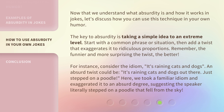Now that we understand what absurdity is and how it works in jokes, let's discuss how you can use this technique in your own humor. The key to absurdity is taking a simple idea to an extreme level. Start with a common phrase or situation, then add a twist that exaggerates it to ridiculous proportions. Remember, the funnier and more surprising the twist, the better. For instance, consider the idiom 'it's raining cats and dogs.' An absurd twist could be: 'It's raining cats and dogs out there — just stepped on a poodle.' Here, we took a familiar idiom and exaggerated it to an absurd degree, suggesting the speaker literally stepped on a poodle that fell from the sky.